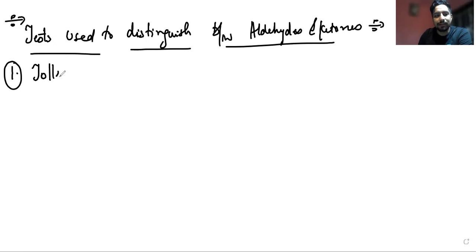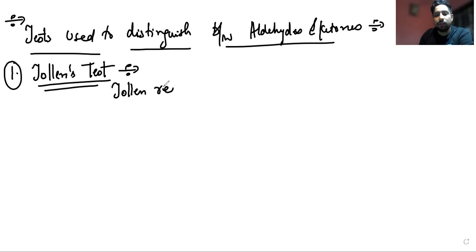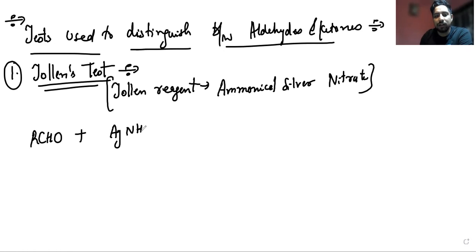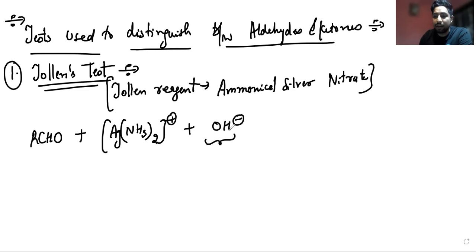Firstly we will discuss Tollens test. In the Tollens test we use a reagent called Tollens reagent, which is ammoniacal silver nitrate. Now if we are having an aldehyde and we add the ammoniacal silver nitrate — the Tollens reagent — there is a condition: this reaction has to be carried out in the basic, alkaline medium. Otherwise this reaction won't happen, so we will add a base. This results in the formation of RCOO⁻, the carboxylate ion, along with silver and water.